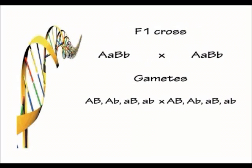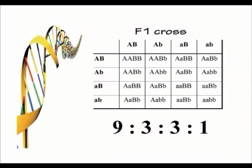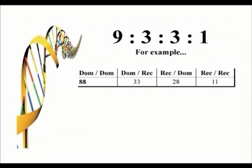What Mendel did next was cross the F1 individuals with one another — big A, little a, big B, little b crossed with the same genotype — and he ended up producing offspring that followed a ratio we should all be familiar with: 9:3:3:1. As shown on screen, nine are dominant for both characteristics, three are dominant for one and recessive for the other, three the opposite way around, and one is recessive for both.